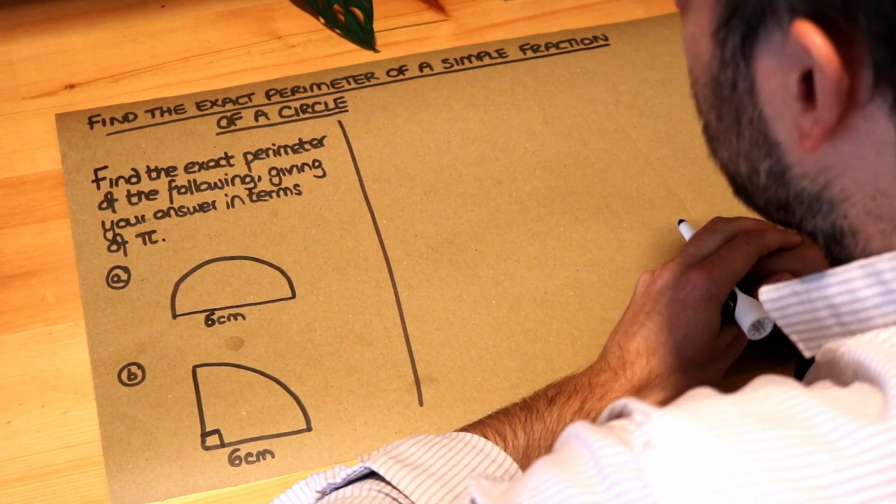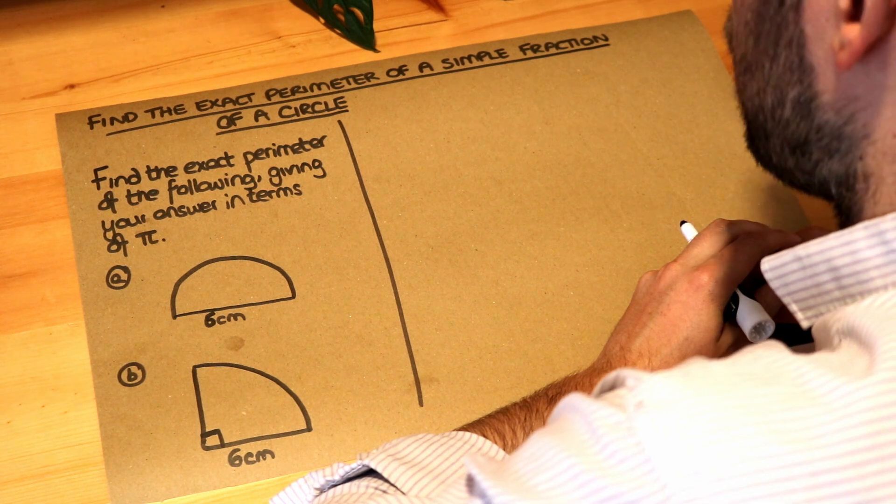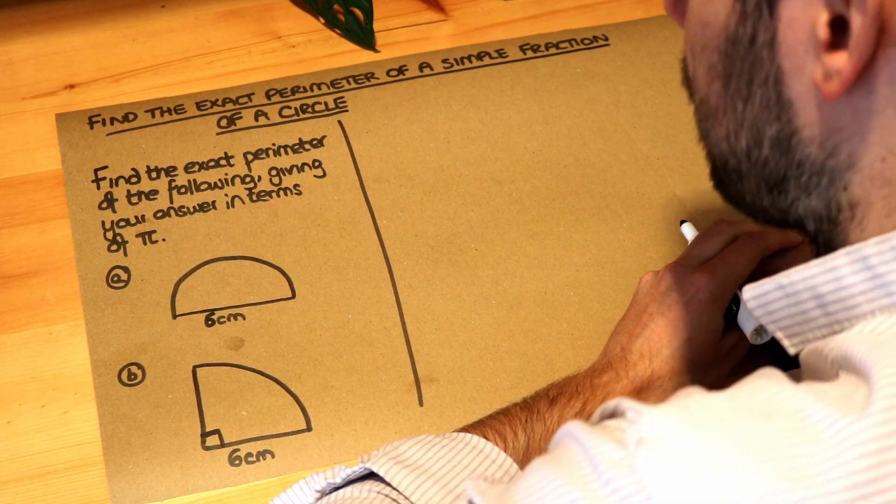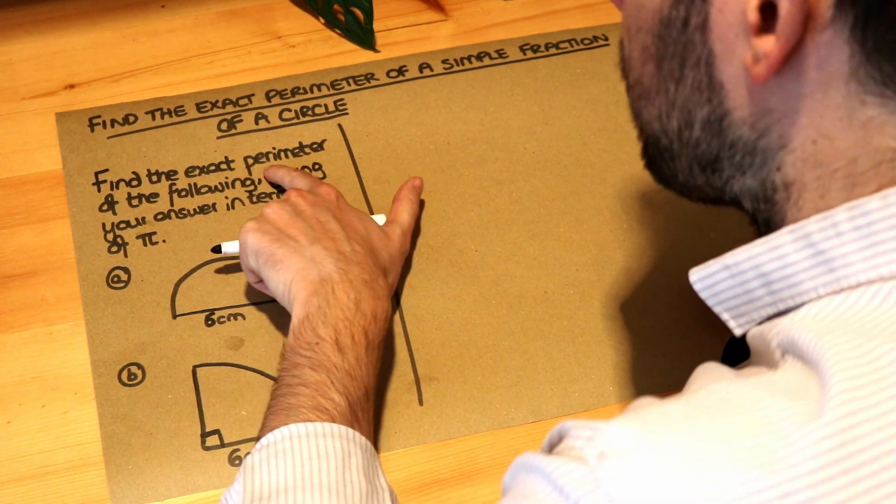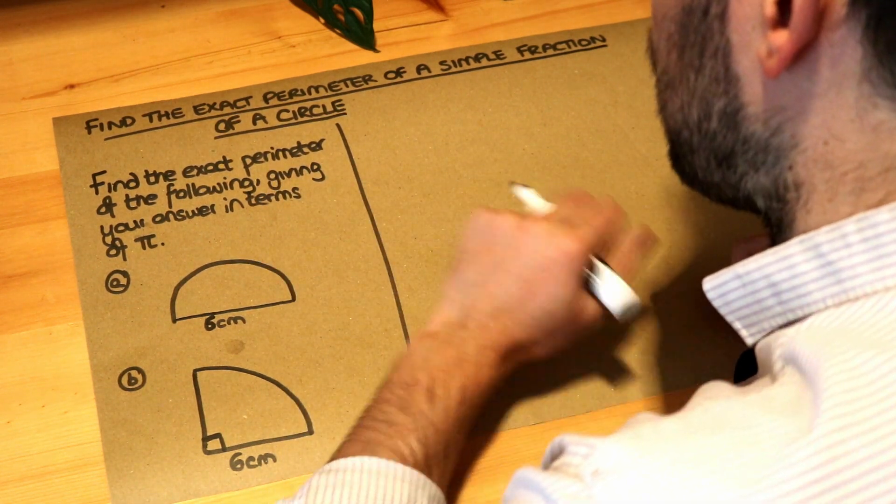Hello and welcome to this Dr Frost video on finding the exact perimeter of a simple fraction of a circle. Let's read the question. Find the exact perimeter of the following, giving your answer in terms of pi.